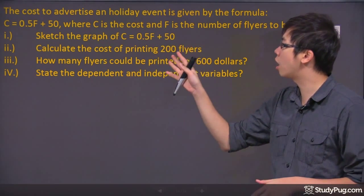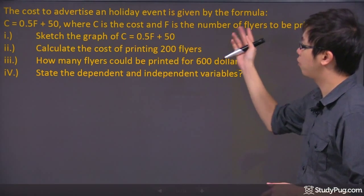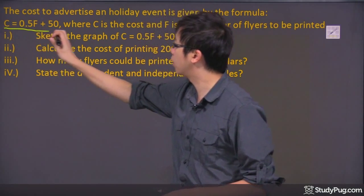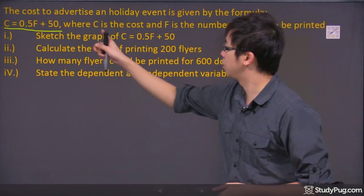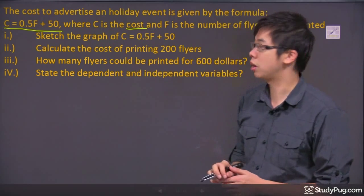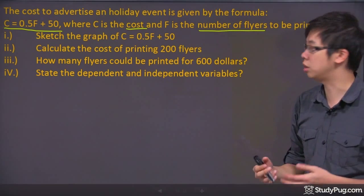So we've got a cost to advertise in a holiday event. It's given by the formula, which is all the way over here. So we've got C equals 0.5F plus 50. The C is the cost, and the F is the number of flyers to be printed.